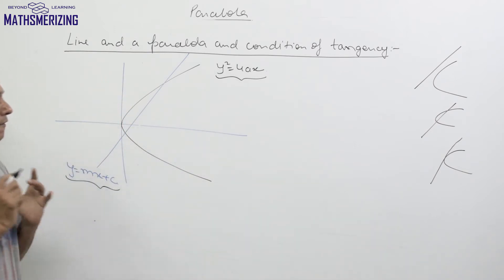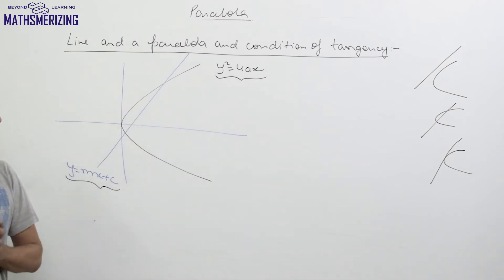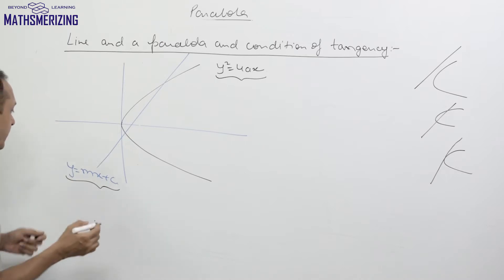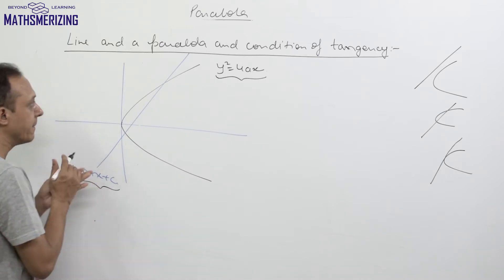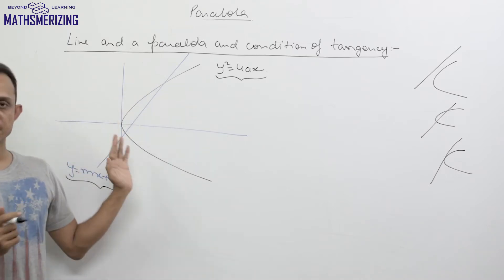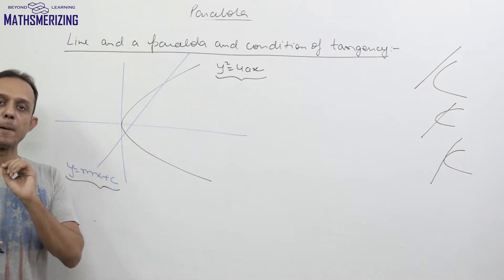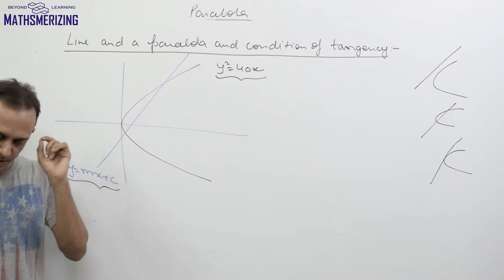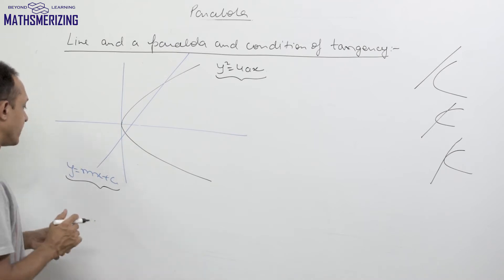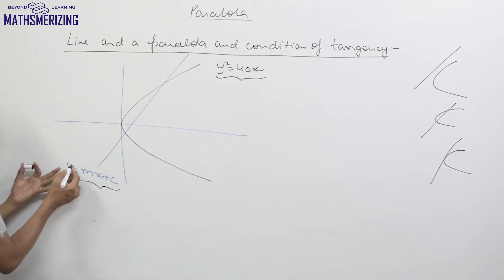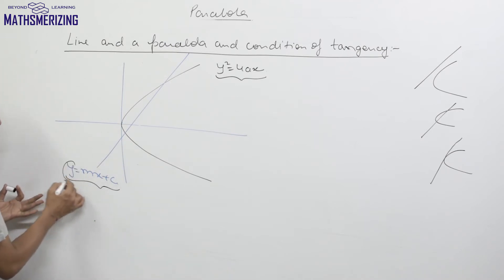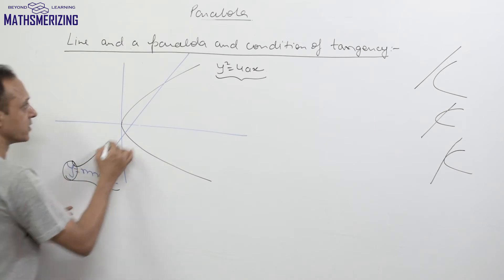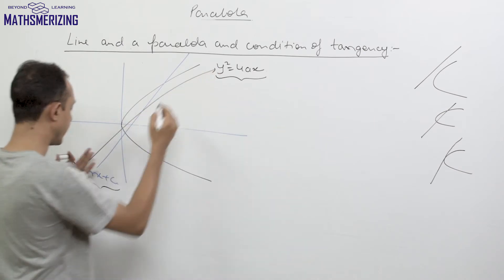Now how do we find this condition? What we generally do in this type of question is find the points of intersection. For the point of intersection, we just need to eliminate the variable, so I'll substitute the value of y into the parabola equation.